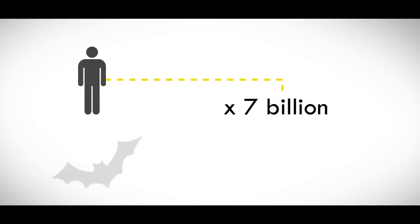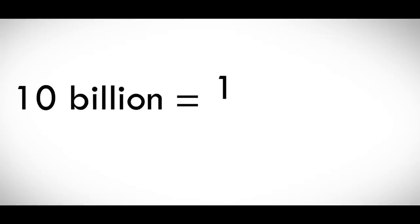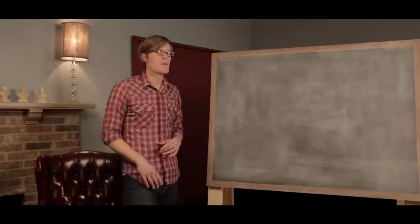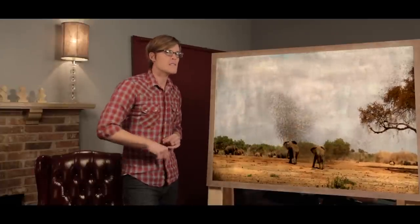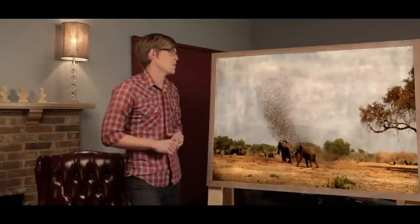But we're soundly outnumbered by the world's 10 billion bats, which as a group make up a staggering 1 in 5 mammal species on Earth. And humans are also beaten in the bird world. The African red-billed quelea is the most abundant bird on Earth, with as many as 10 billion individuals dotting the savannah and annoying the elephants.